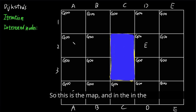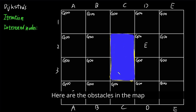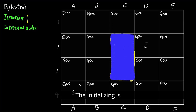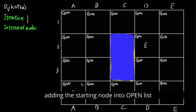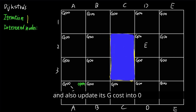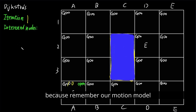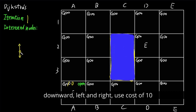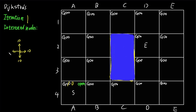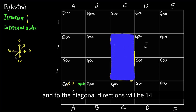This is the map. In the initializing step, we assign the g value for each node as infinite. Here are the obstacles in the map. Initialization involves adding the starting node into the open list and updating its g cost to zero. Our motion model: moving up, down, left, and right costs 10, and moving diagonally costs 14.